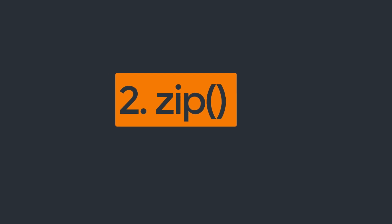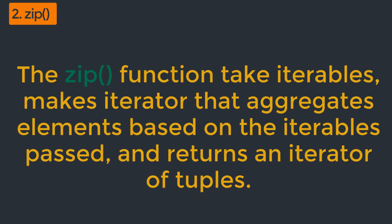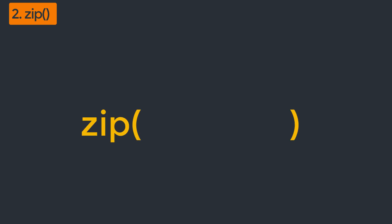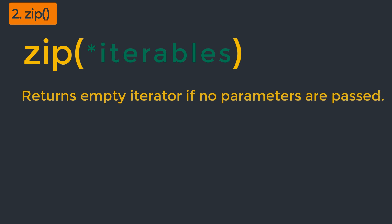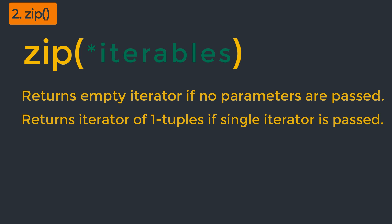The next function is the zip function. The zip function takes iterables and makes an iterator that aggregates elements based on the iterables passed, and returns an iterator of tuples. The syntax of the zip function is simply zip. Inside that, we have to pass all of the iterables. The zip function can accept built-in iterables like string or dict, and we can also pass user-defined iterables like our own object which has the __iter__ method.